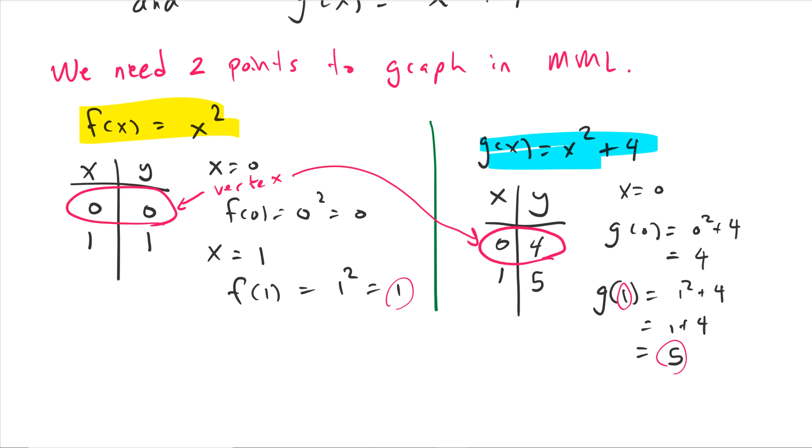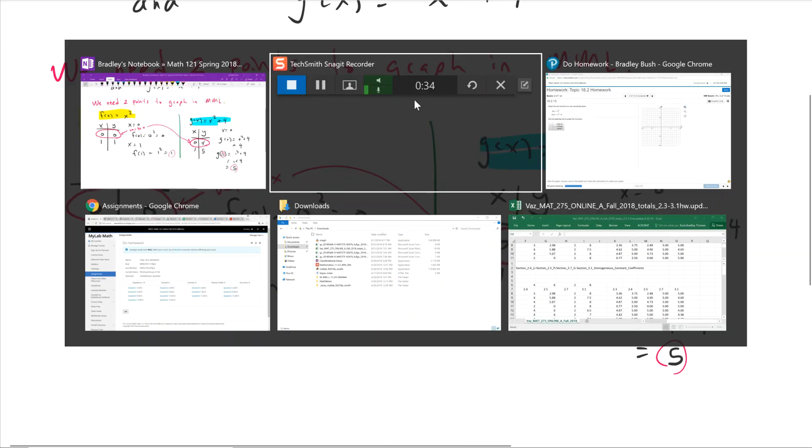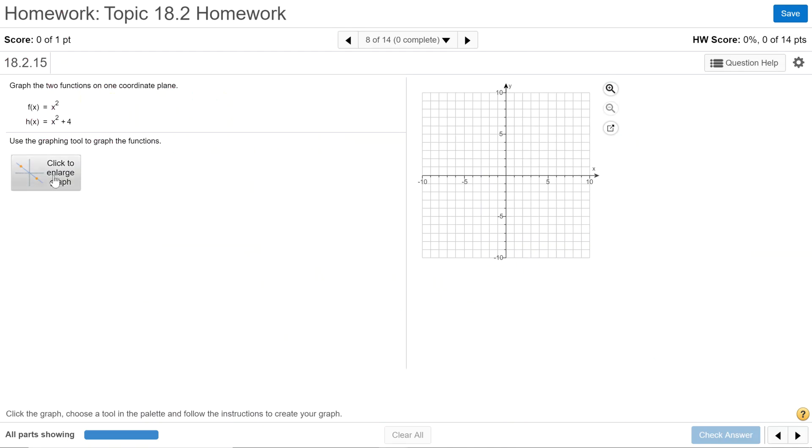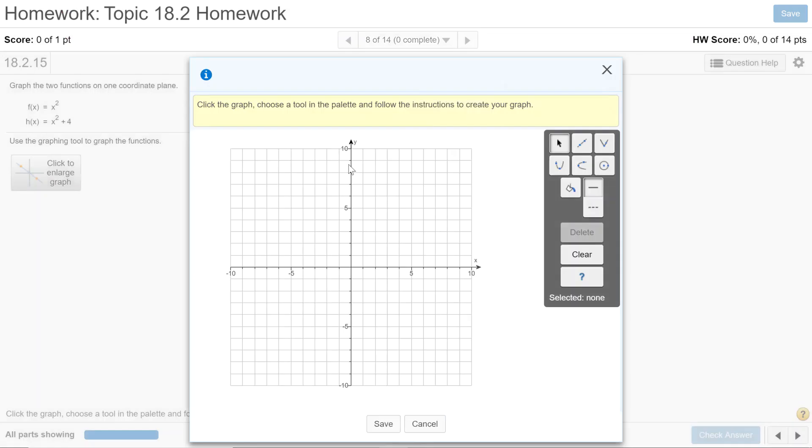Now we take these two points and graph them. Let's go to the graphing window and click enlarge. Click the parabola button. I'll do x squared first. The two points are (0, 0) and (1, 1). There's my first parabola.